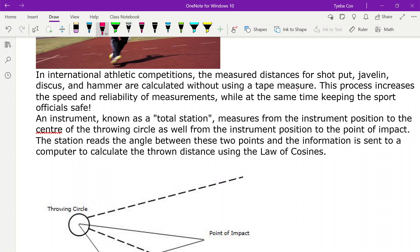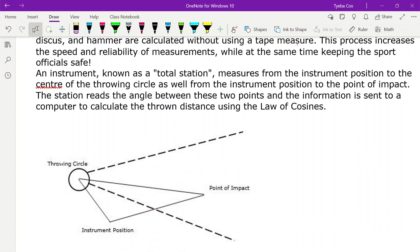The station reads the angle between these two points and the information is sent to a computer to calculate the thrown distance using the law of cosines. So here's a little diagram of what that looks like.